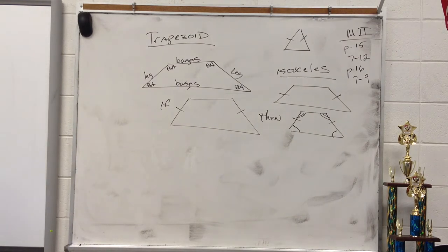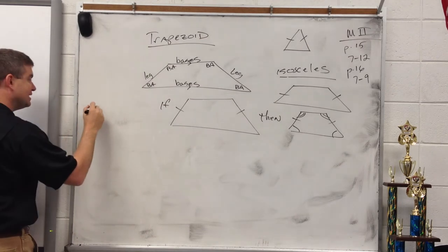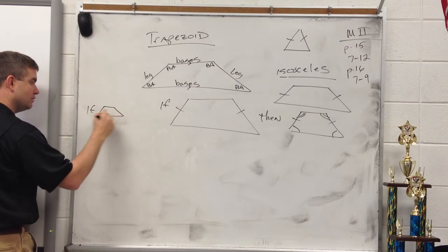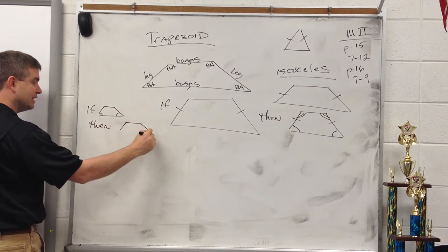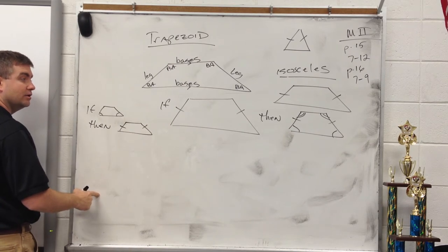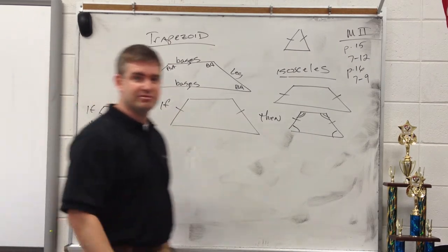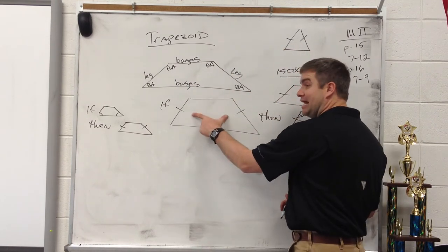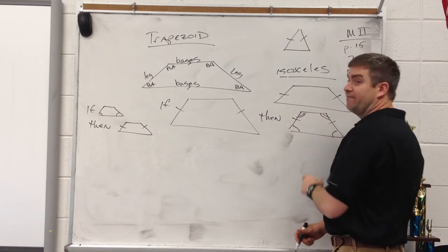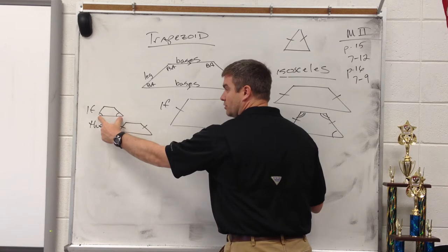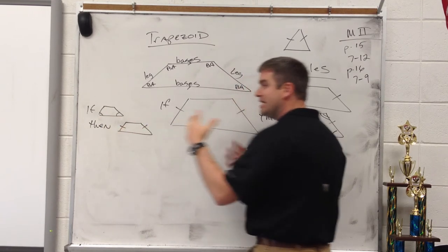Theorem: if a trapezoid is isosceles, then each pair of base angles is congruent. Then we have the converse — if a trapezoid has a pair of congruent base angles, then it is an isosceles trapezoid. If I know the legs are congruent, then I know these base angles and these base angles are congruent. And on the flip side, if I know the base angles are congruent, then I know the legs are congruent. They go hand in hand.